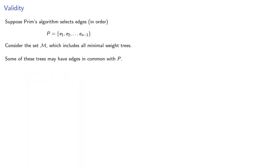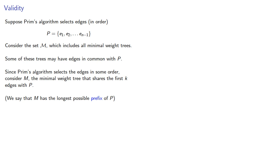Since Prim's algorithm selects the edges in some order, consider M, the minimal weight tree that shares the first k edges with P. We say that M has the longest possible prefix of P.